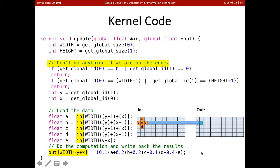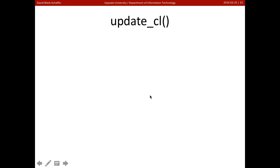So the kernel code is the same as the C code, except that we need to deal with the fact that instead of having two for loops on the outer loop here, we're being executed for every thread on the GPU, and we need to do the right thing if we're the right thread.